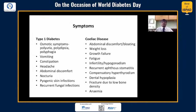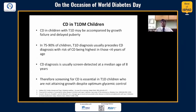Looking at the symptoms of type 1 and celiac together, a patient might have abdominal discomfort, bloating, weight loss, and most prominently, growth failure, fatigue, infertility, hypogonadism, aphthous stomatitis, dental hypoplasia, fractures due to poor bone density, and anemia. So if you have a child with type 1 diabetes who is having growth failure and delayed puberty despite reasonable glycemic control, the first differential diagnosis to consider is celiac. The majority of type 1 diabetes cases usually precede celiac, and the risk of celiac is highest in those diagnosed before age four years.